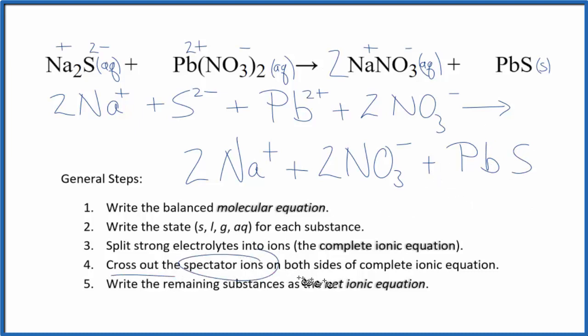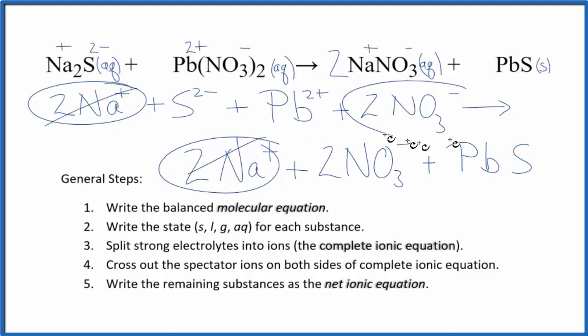Now we can cross out spectator ions. They're on both sides of the complete ionic equation. In the reactants, I see 2 sodium ions and in the products. Get rid of that. 2 nitrate ions in the reactants, 2 in the products. Get rid of that. And what's left, that's our net ionic equation for Na2S plus Pb(NO3)2.